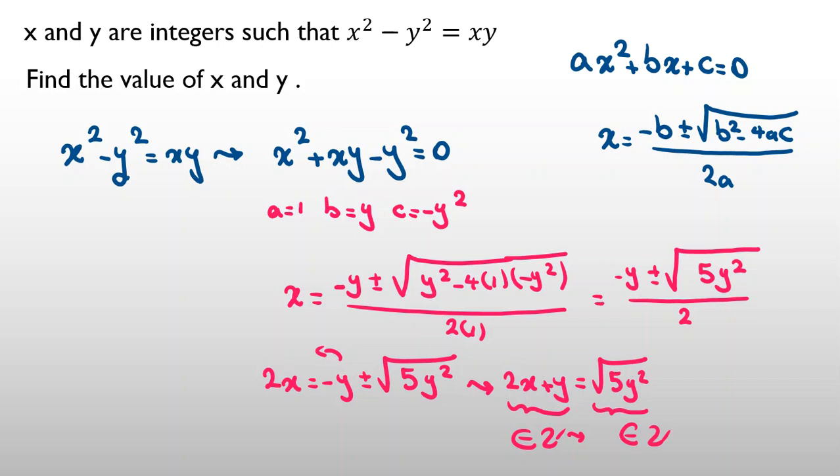Because it is integer, 5y squared should be a perfect square. 5y squared should be a perfect square. So, the only possible case for here, because look, it is perfect square, it is also perfect square. So, if you want to consider the only possible case, my claim is y should be 0.